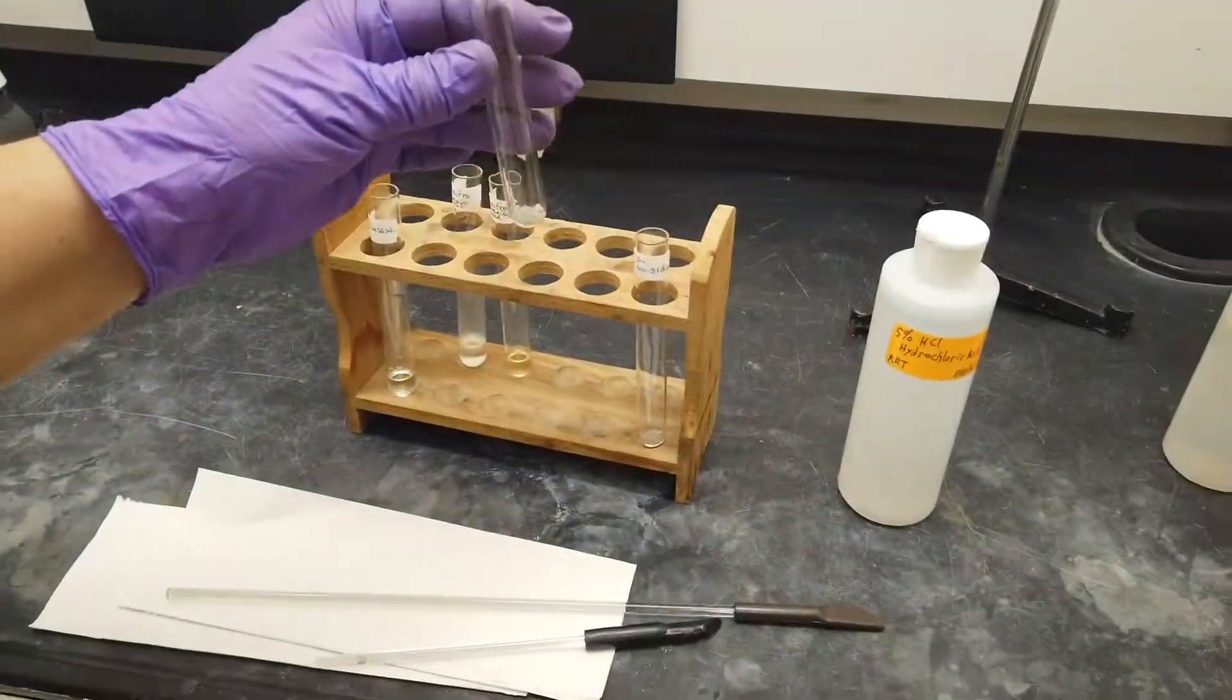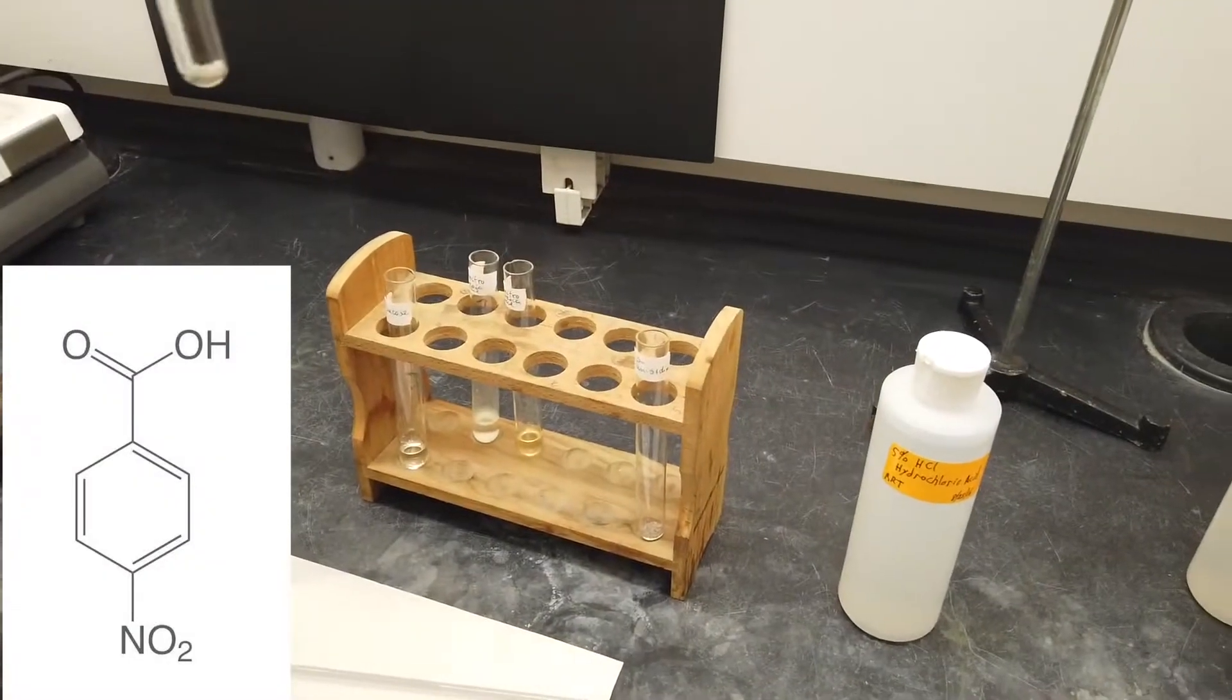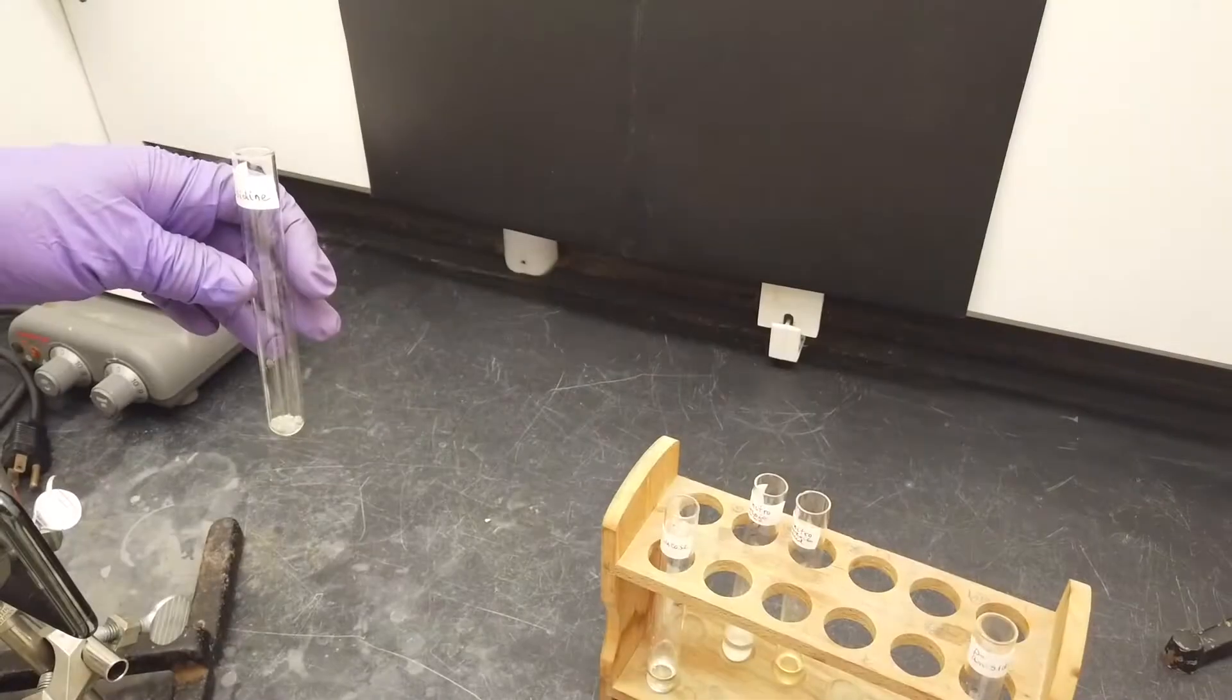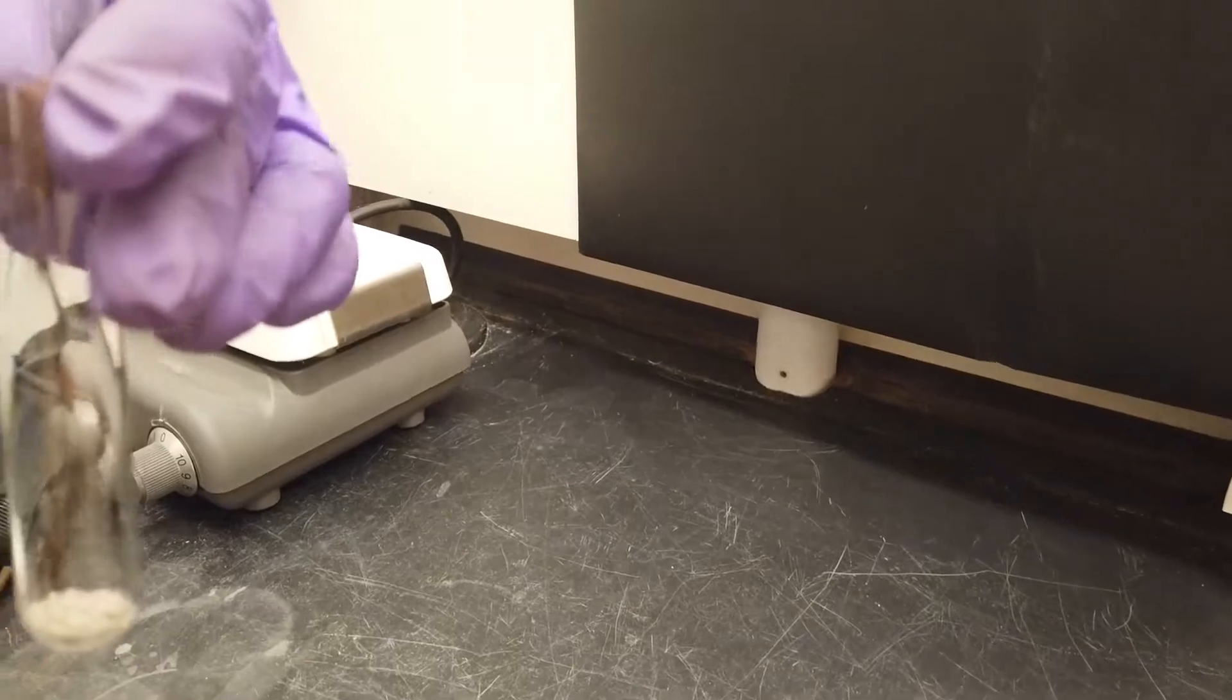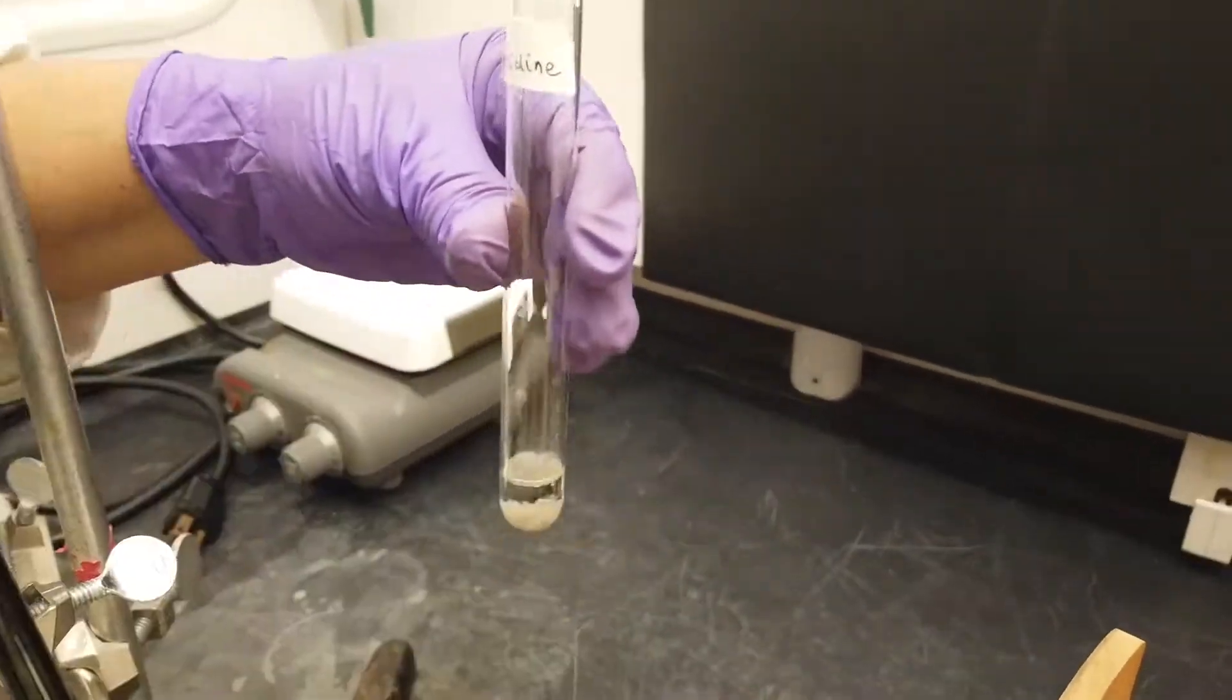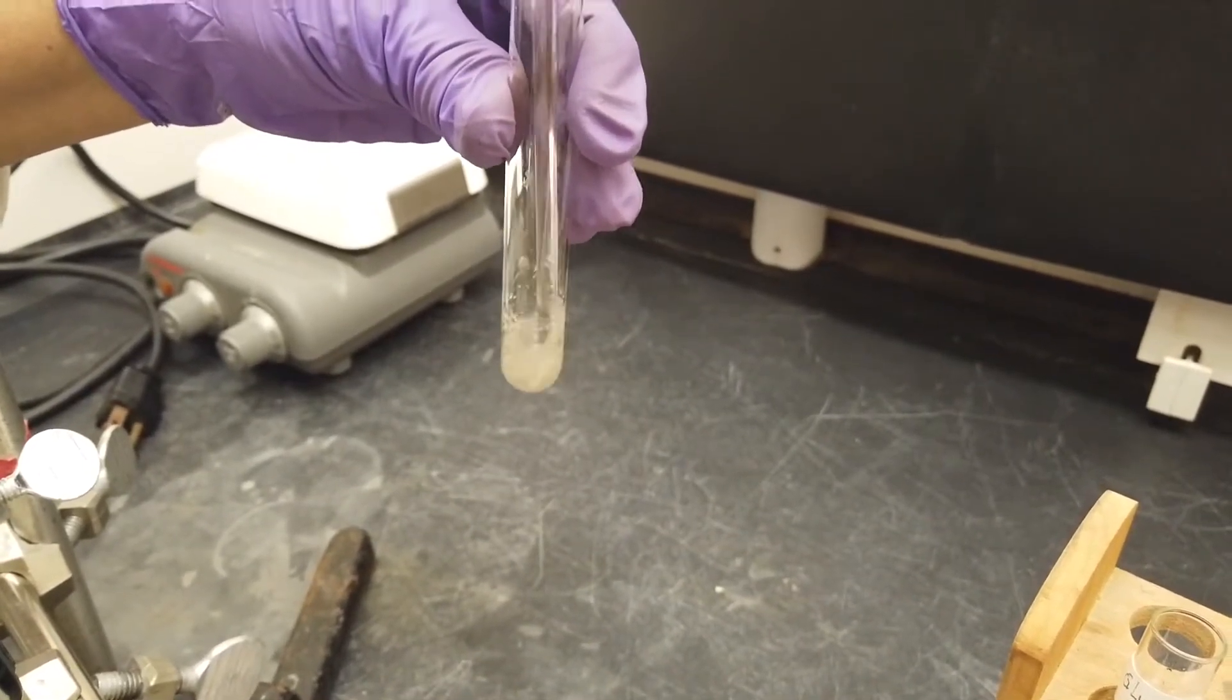Next, we will look at para-anesidine, a base, and its water solubility. Look at its structure and make your prediction on if it will be water soluble. When we add water, we can see that it is not soluble.